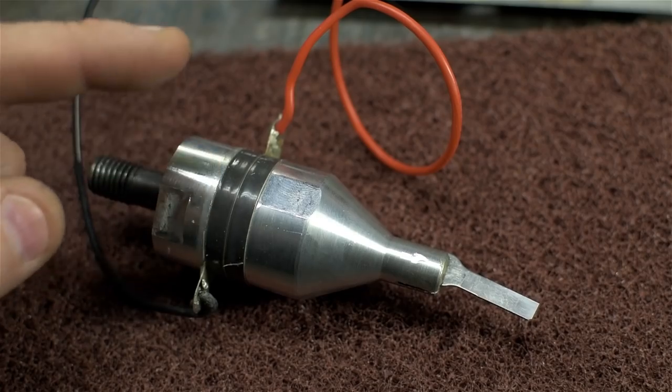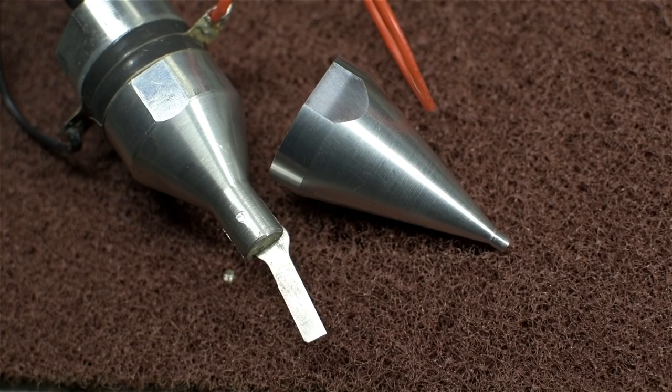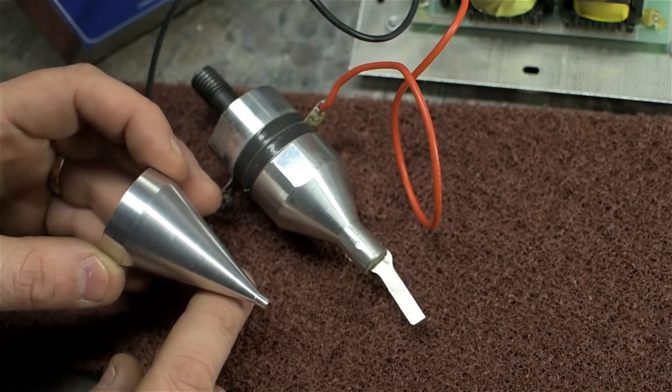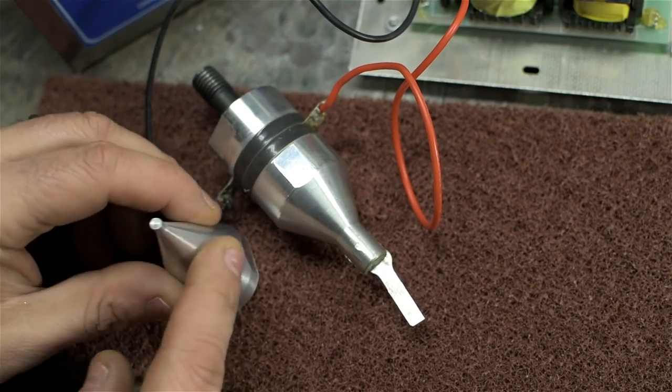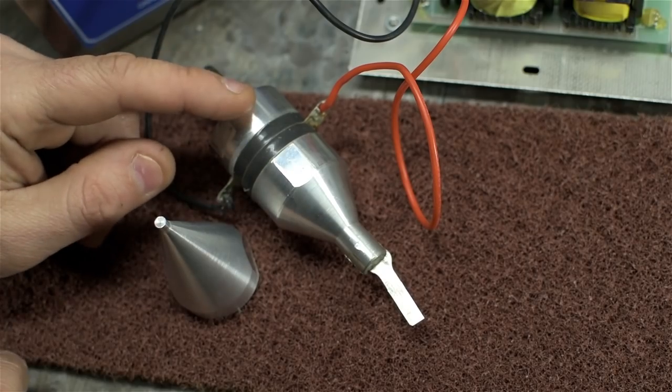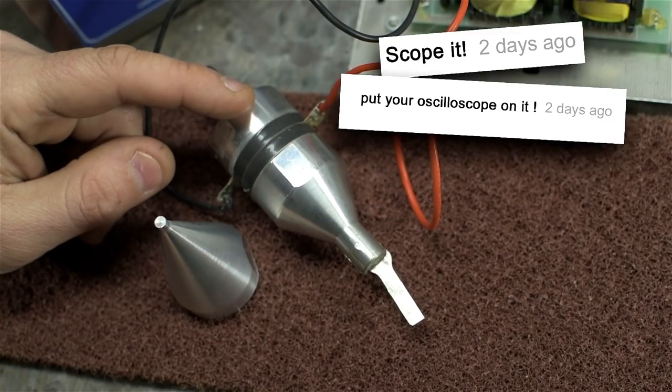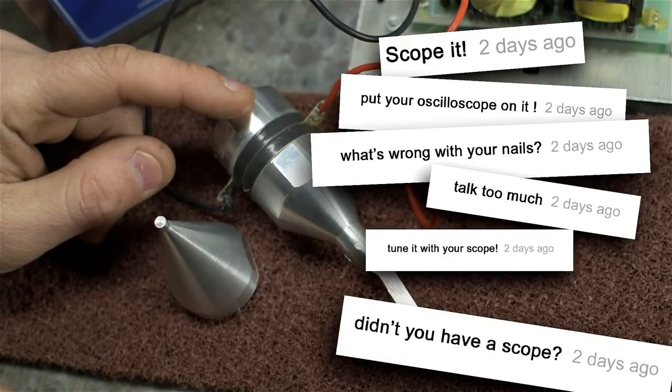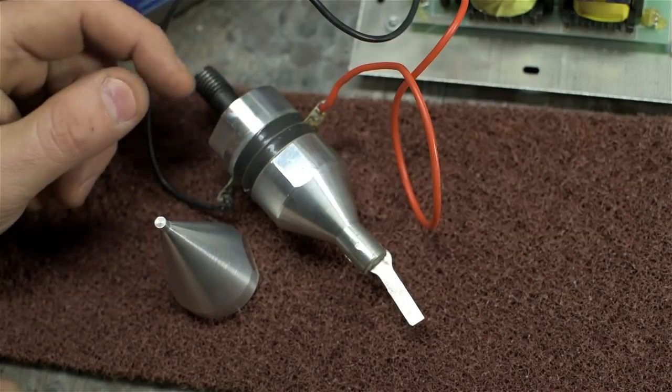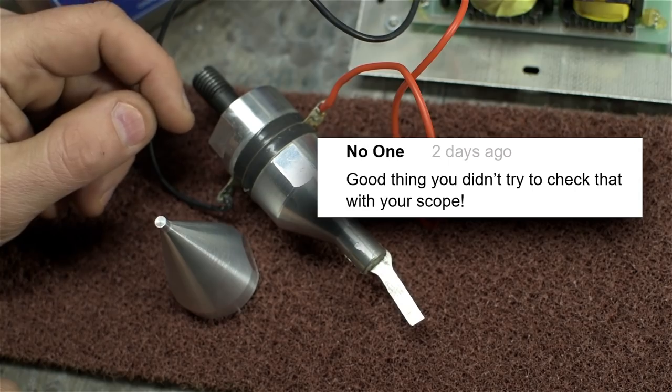Before I go ahead and install this new horn, I've got some good news and some bad news. In the last video I got a lot of suggestions to check this thing with a scope - scope it, put your oscilloscope on it, didn't you have a scope?